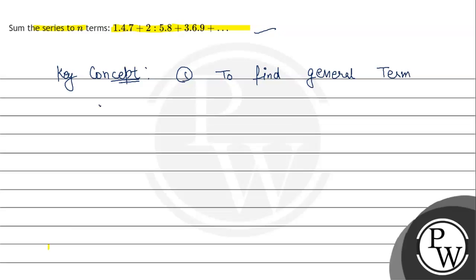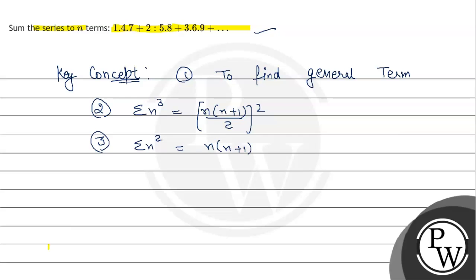Next, the results we will use: summation of n³ is equal to [n(n+1)/2]². Summation of n² is equal to n(n+1)(2n+1)/6. And summation of n is equal to n(n+1)/2.